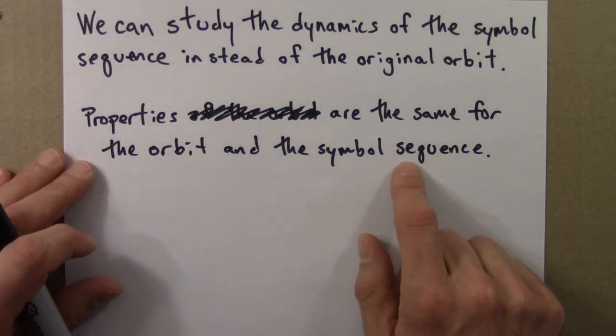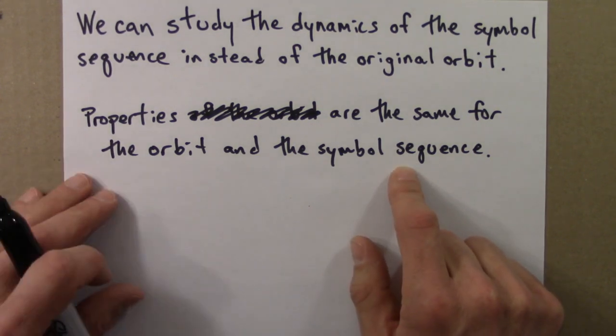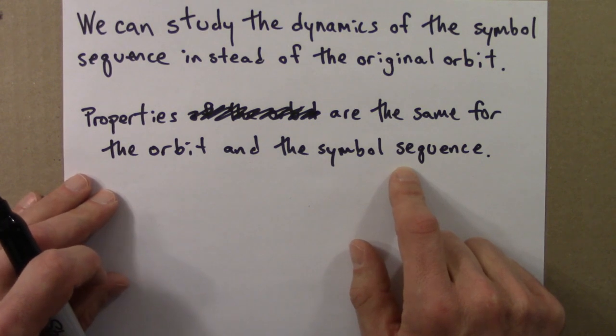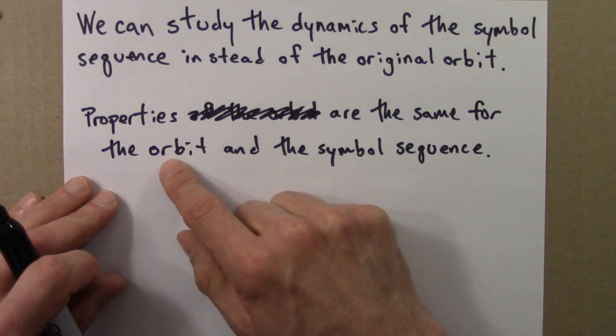And if the symbol sequence, the symbolic dynamical system has, say, sensitive dependence on initial conditions or aperiodicity, then the original orbit, the original dynamical system would as well.